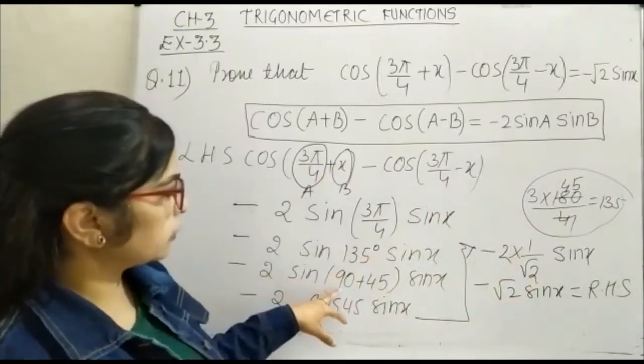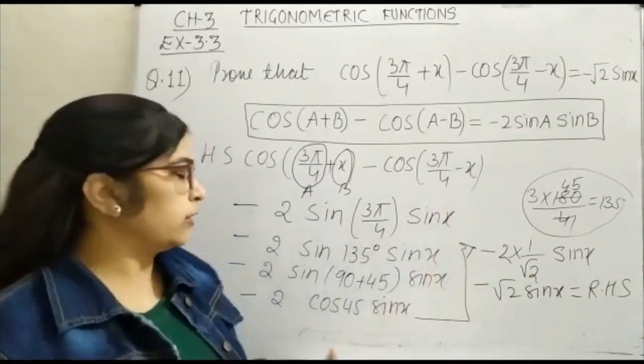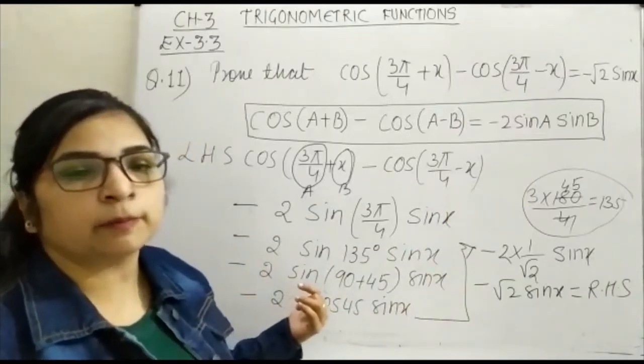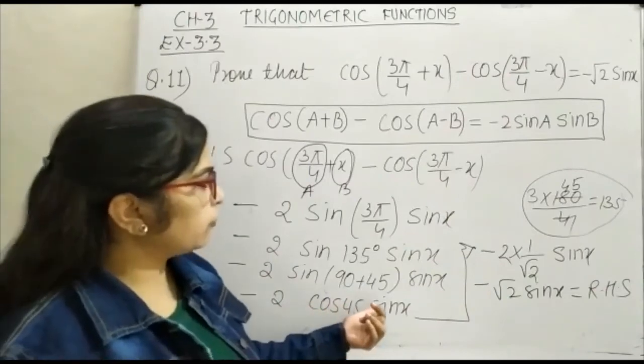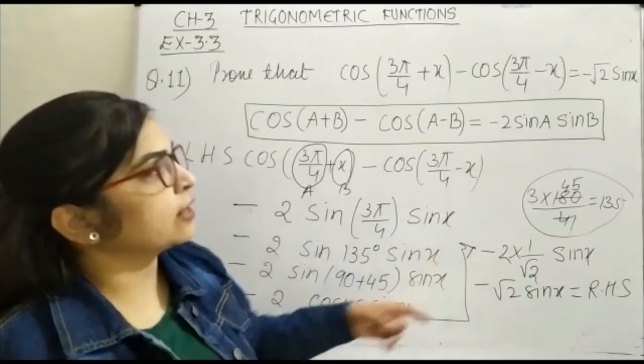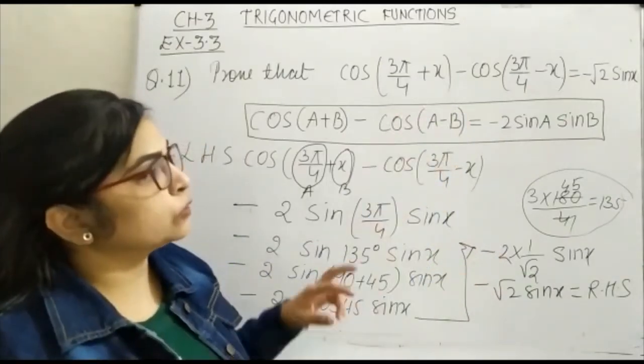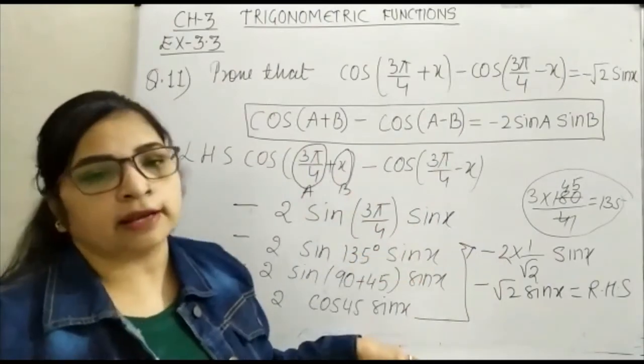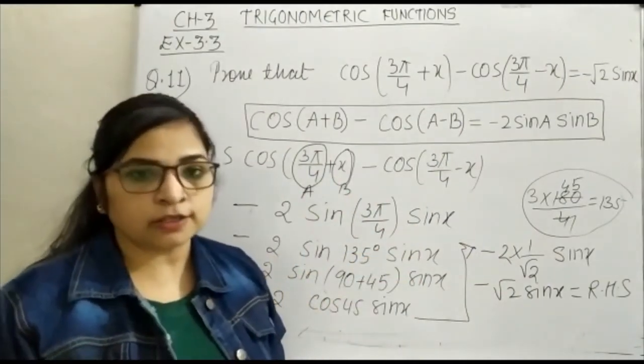135 aapak if you plus star force 45 value 1 by √2 and it has rationalized because we want this answer is your minus √2 sin x on the right hand side so this is how you can prove this question thank you.